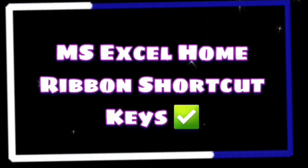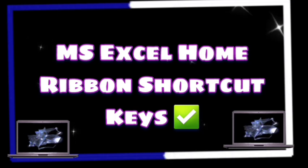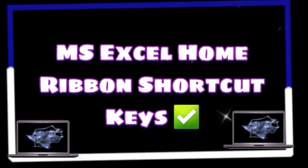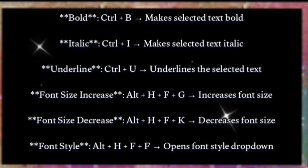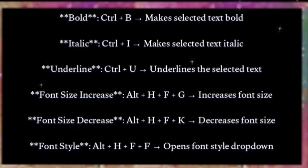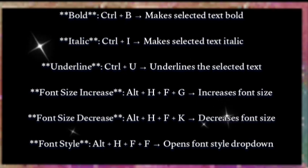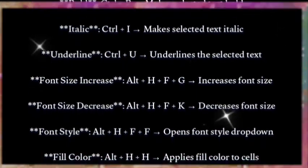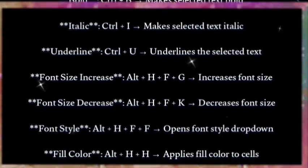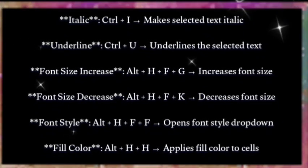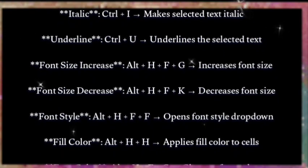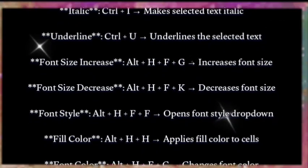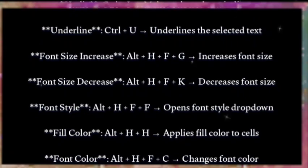Hi everyone, welcome back to my channel. Today in this video we're going to see MS Excel Home Ribbon shortcut keys. Let's get started. Bold: Ctrl+B — makes selected text bold. Italic: Ctrl+I — makes text italic. Underline: Ctrl+U — underlines the selected text.